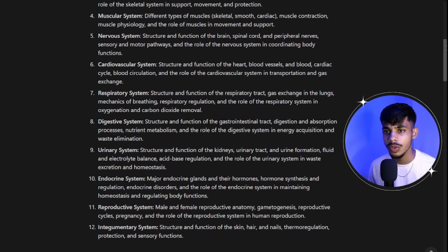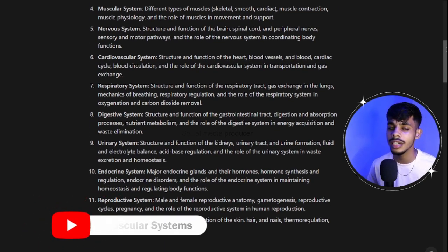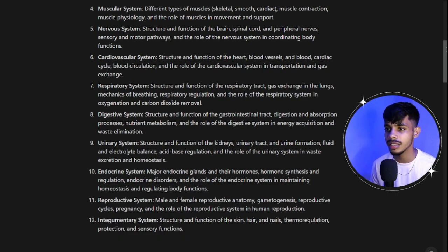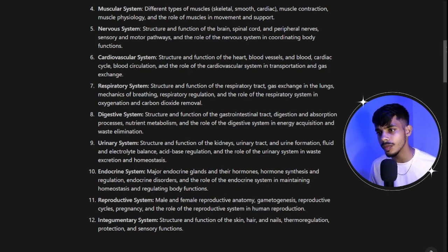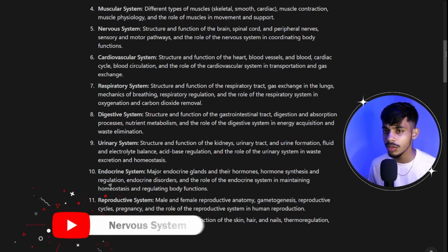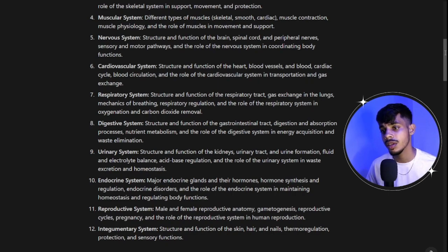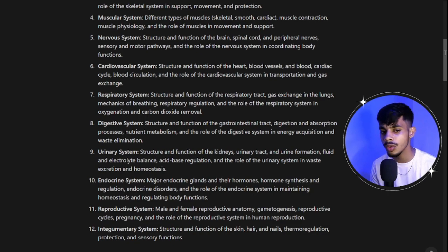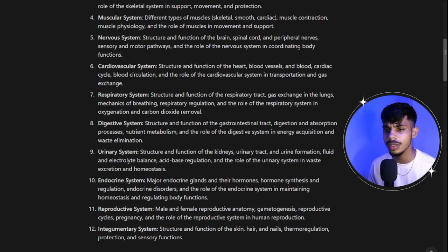After that, we get into the muscular system, where you will understand the different types of muscles — skeletal muscle, smooth muscle, and cardiac muscle — their different structures, and how muscles help in contraction, movement, and providing support to the body. Then we move to the nervous system, covering the structure and function of the brain, spinal cord, and peripheral nerves. When developing a prosthetic, the nervous system becomes very important, and we will explore practical implementations as well.